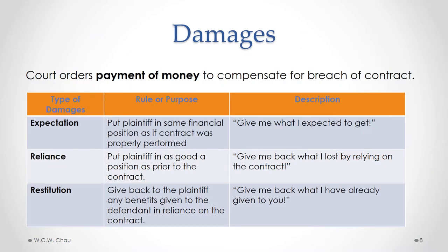When a court orders damages, it is ordering the breaching party — the party who breached the contract — to pay some amount of money to the innocent party to compensate for that breach of contract. How those damages are determined will vary depending on the specific type of damages being awarded.